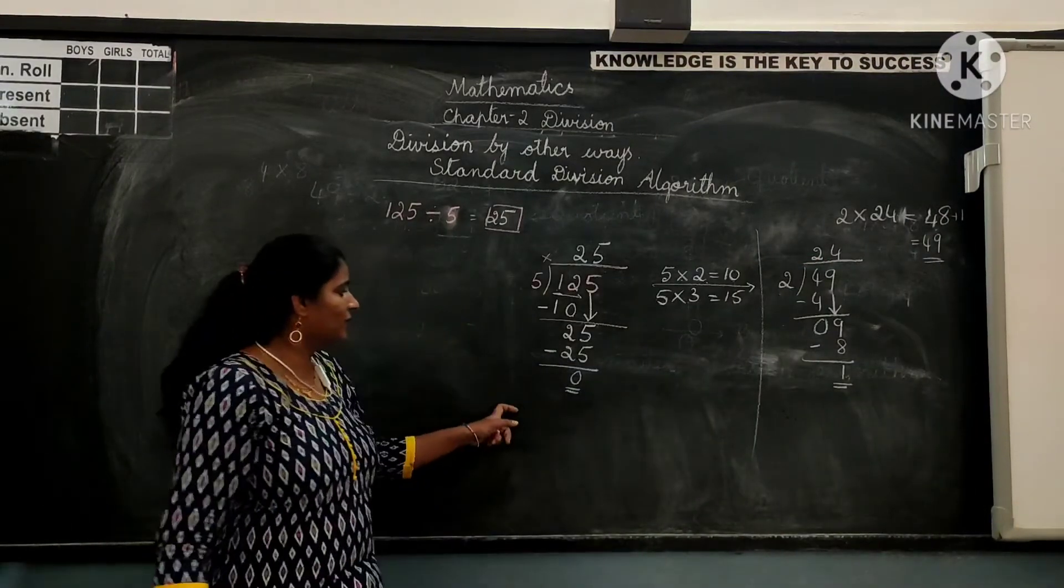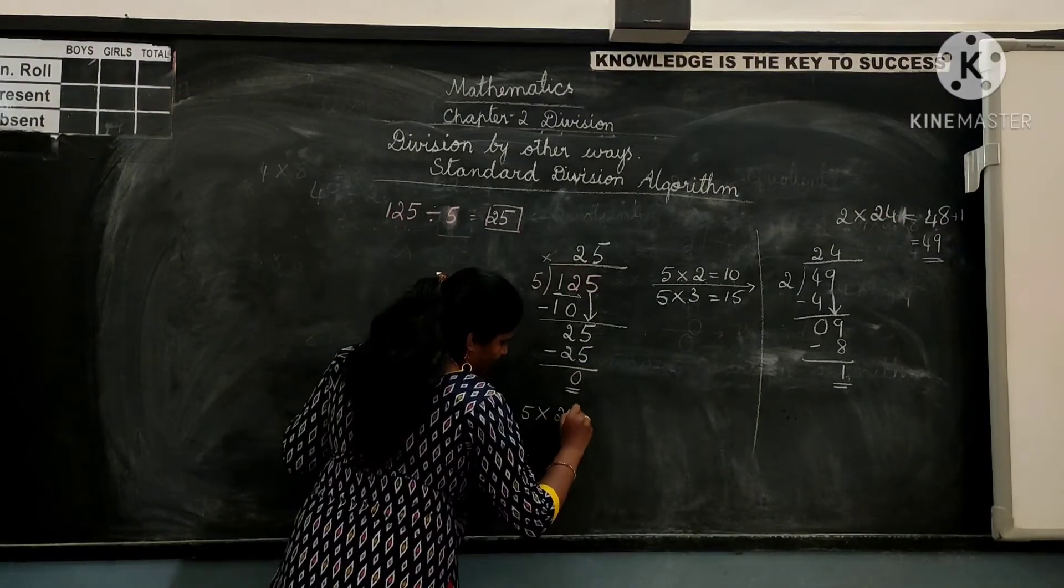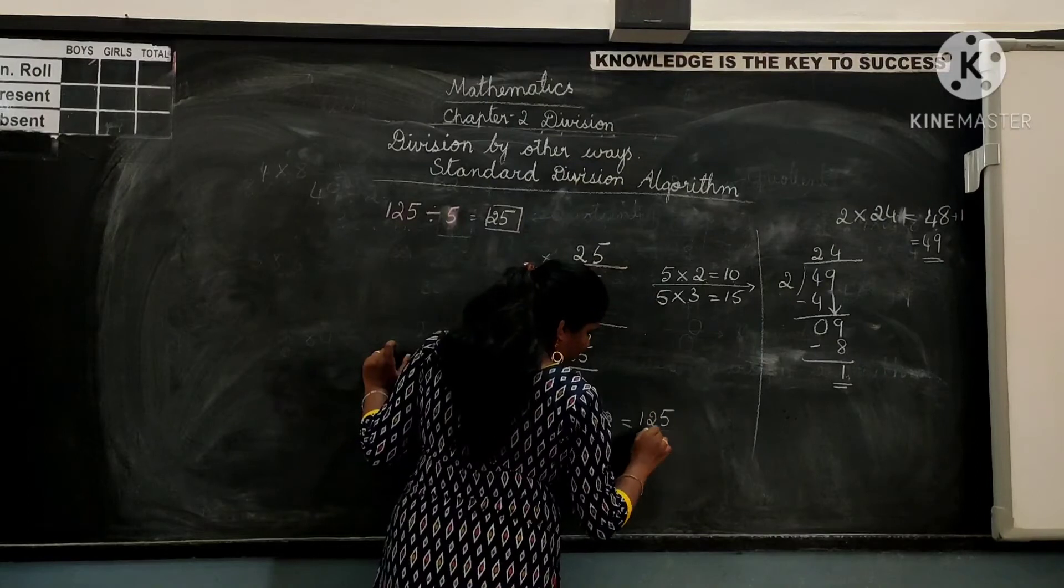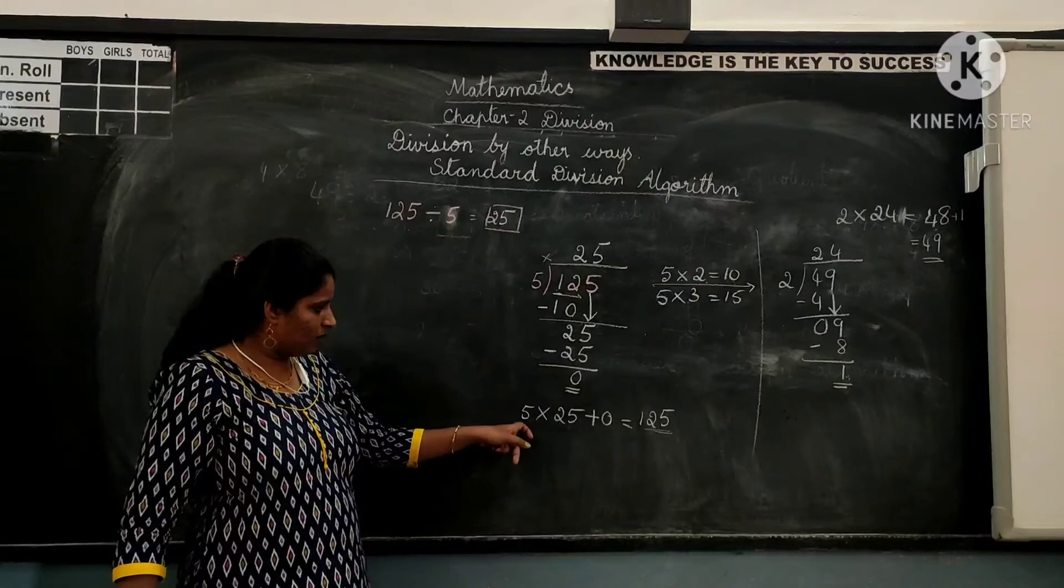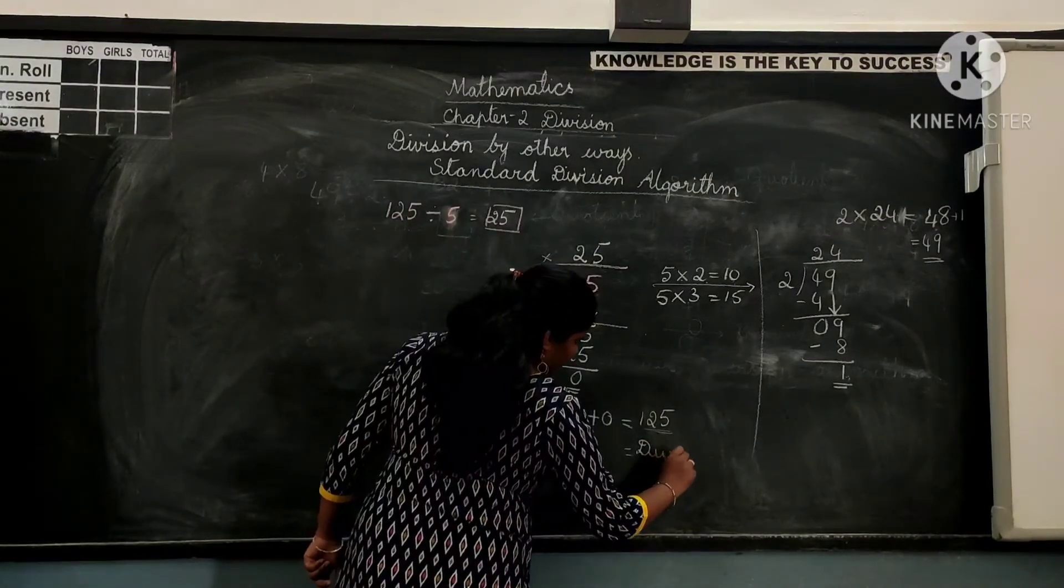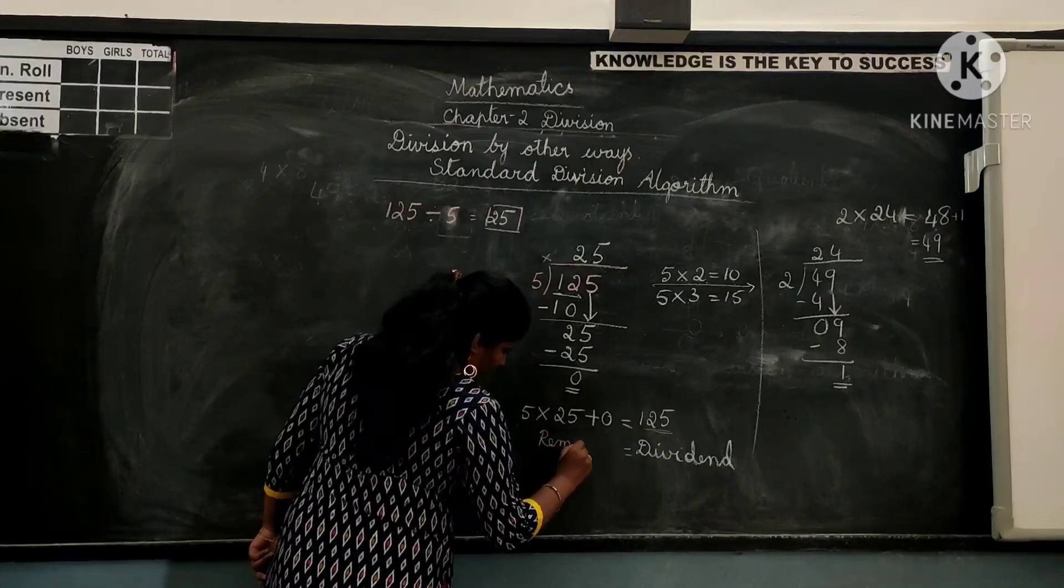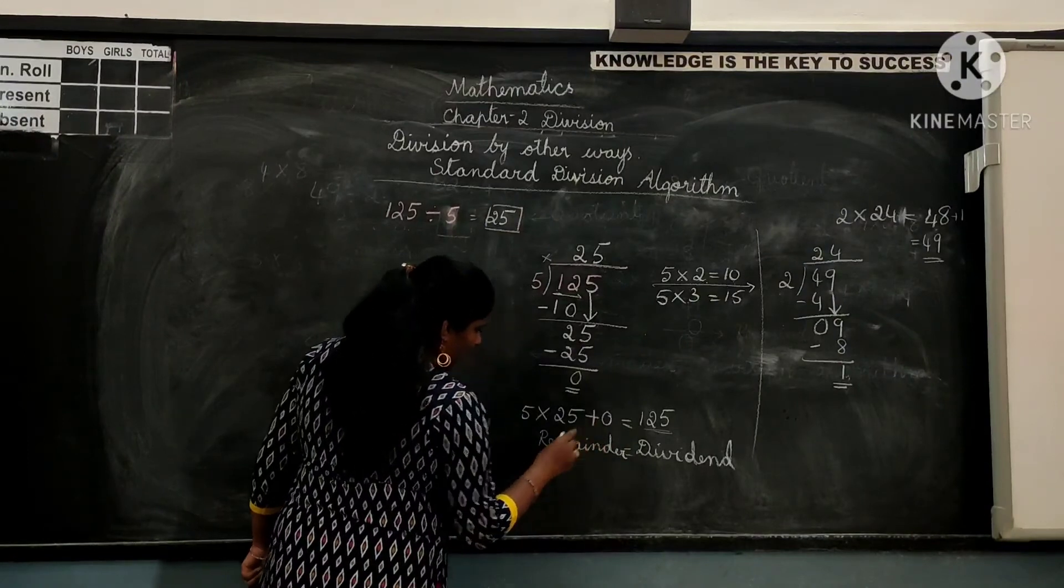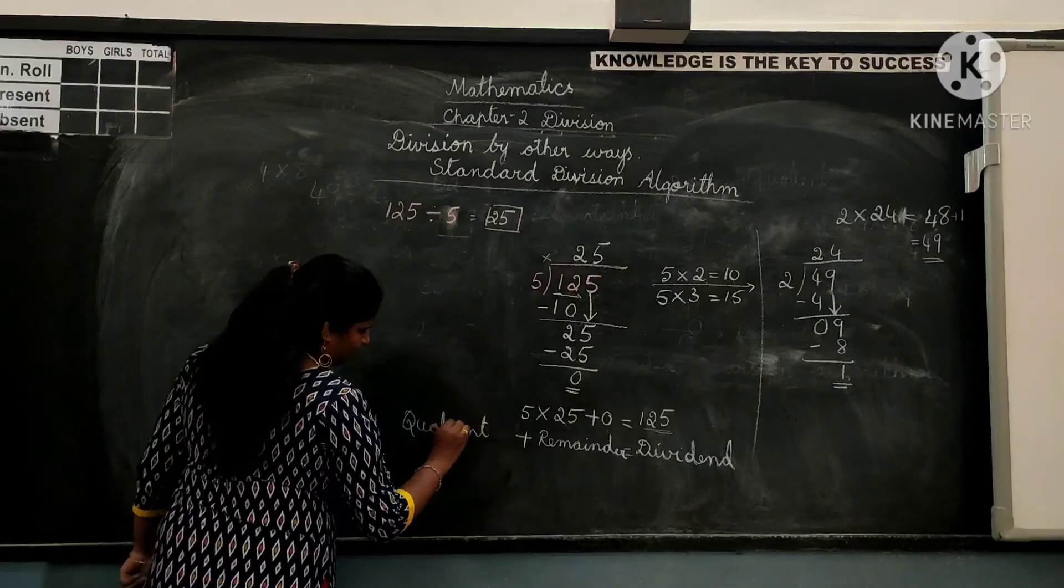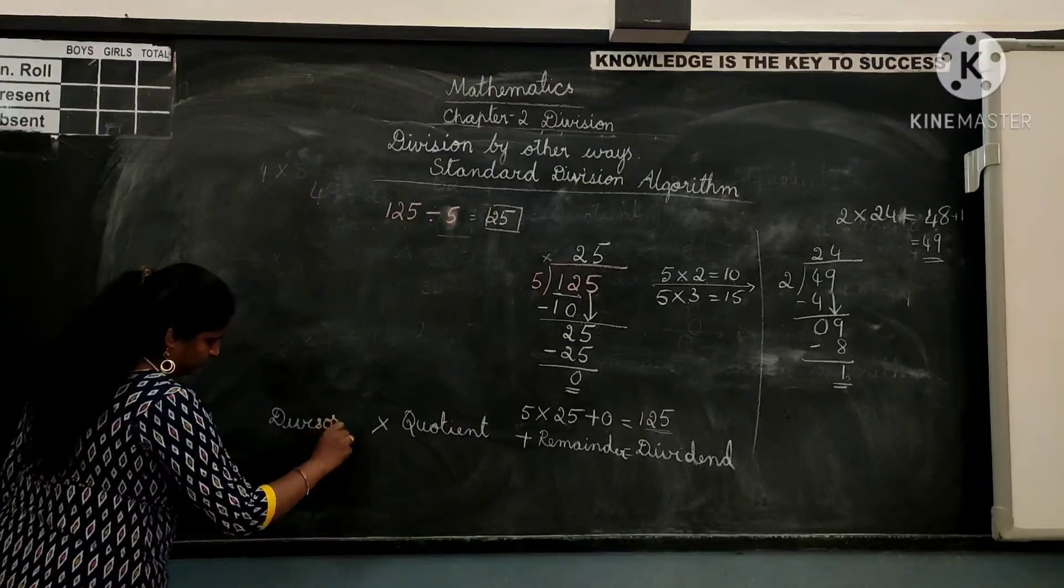So now here's the question. What is the remainder here? We have 0, just use the method in the same way. 5 into 25 plus 0. That is 5 times 25 is 125. 125 plus 0 is 125 itself. So substitute the values. Now what is 125? 125 is nothing but the dividend. 0 is the remainder. We have plus sign. What is 25? 25 is the quotient. We have multiplication. What is 5? 5 is the divisor.